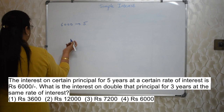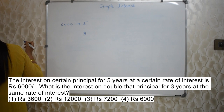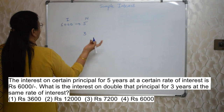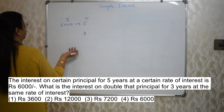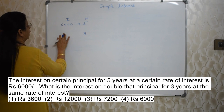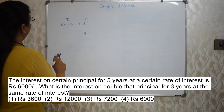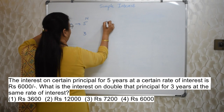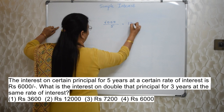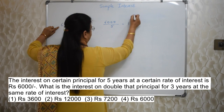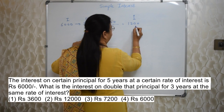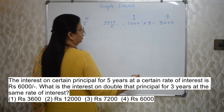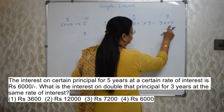They are asking how much interest we will get if the principal is doubled. Here we don't know the principal — so this is based on unitary method. If we are getting ₹6,000 interest for 5 years, we find for 1 year: 6000 ÷ 5 = ₹1,200 per year. Then for 3 years: 1200 × 3 = ₹3,600. However, many students make the mistake of choosing ₹3,600 as the correct option — please don't do that.